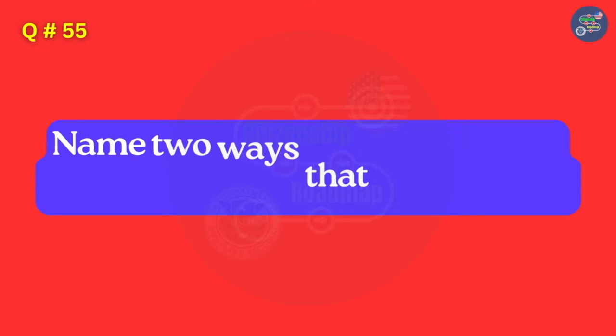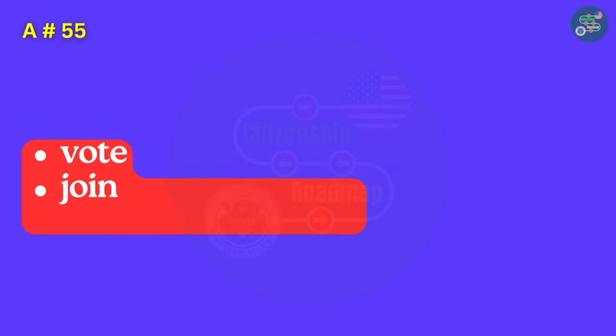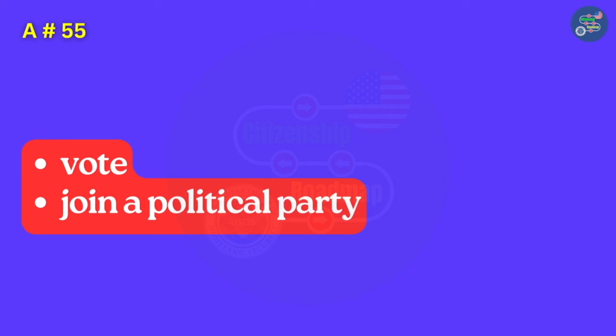Name two ways that U.S. citizens can participate in their democracy. Vote. Join a political party.